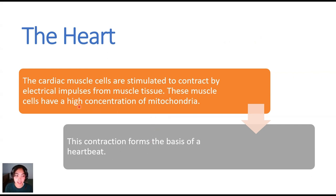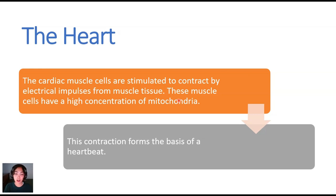The cardiac muscles are stimulated to contract by electric impulses from our muscle tissue. These muscle cells have a high concentration of mitochondria — that's really important to note. Mitochondria are the powerhouse of our cells, which means it does require a lot of energy. Our heart is constantly pumping; it's an involuntary movement for us. This contraction forms the basis of our heartbeat.